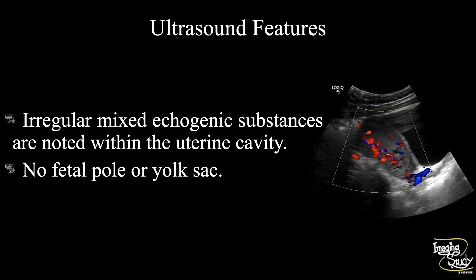So in summary, irregular mixed echogenic substances are noted within the uterine cavity without any fetal pole or yolk sac, suggesting retained products of conception.